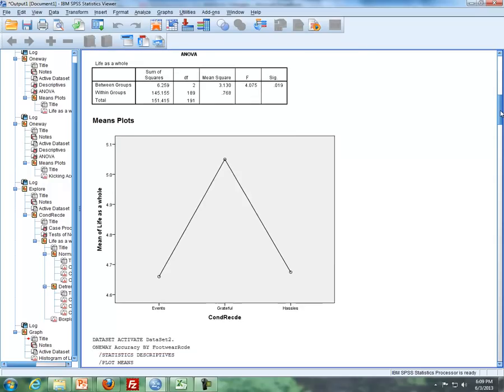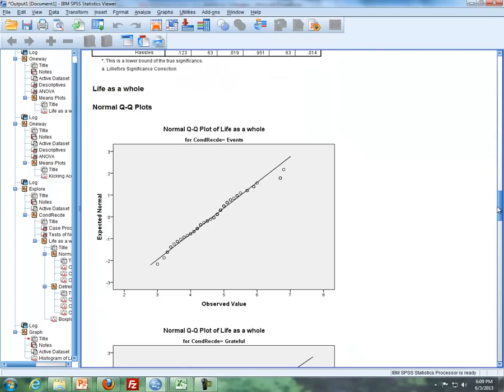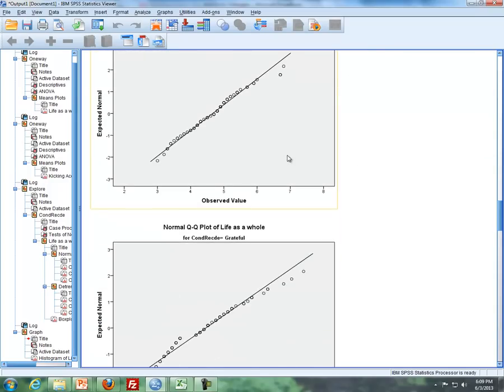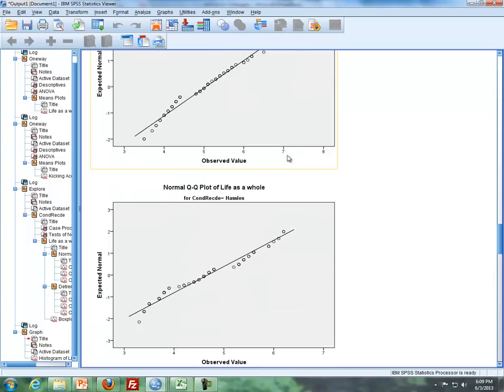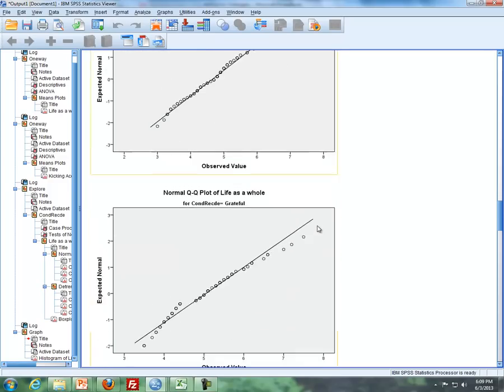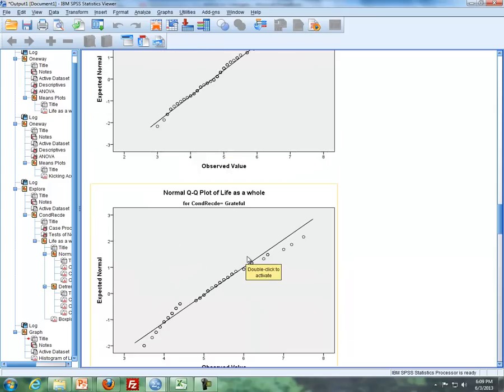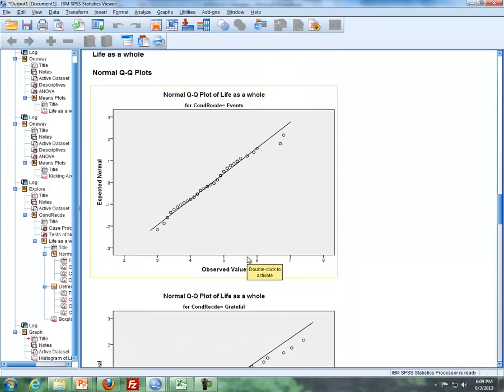Or another way you can look at it is the ratio, is this divided by this, is this less than two? And it is, and so we can assume we have equal variances. For the second requirement to check, which is looking for the data which is normally distributed, I have the data with the three different groups: the events group, the grateful group, as well as the hassles group. And it looks like, for the most part, with all of these, these look approximately normal, especially with the last one here. It's not perfect, but they do look pretty good. So we can assume that the requirement is met that the data is normally distributed.